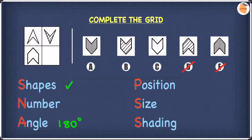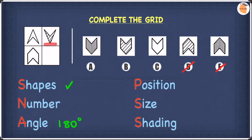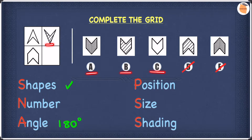Let's move on to the next difference: the shading pattern. The shape on the left is left blank, but the shape on the right is hatched. Out of A, B, and C, which one has a hatched pattern? It's obviously B. B has a hatched pattern, so B is our answer.